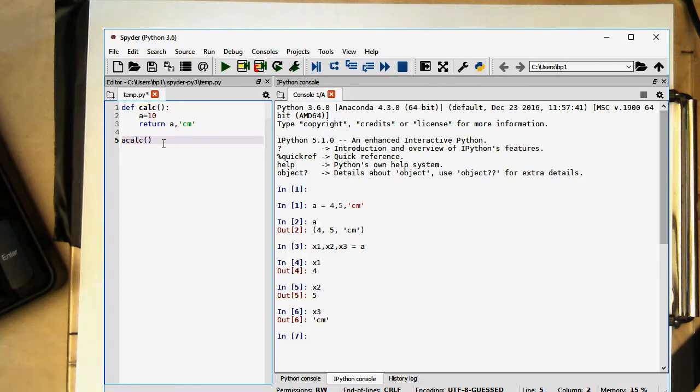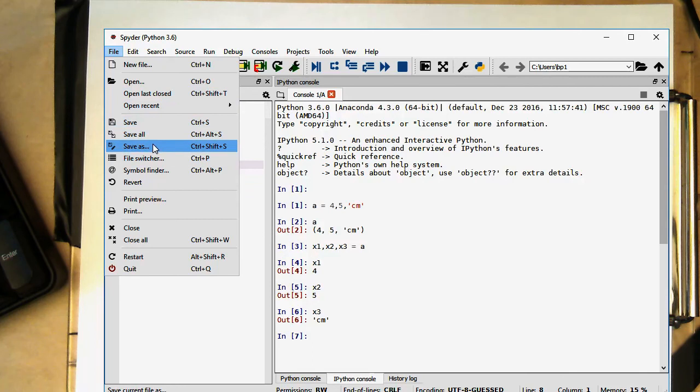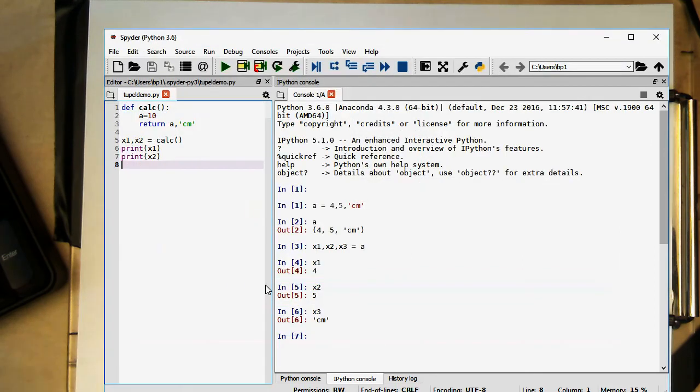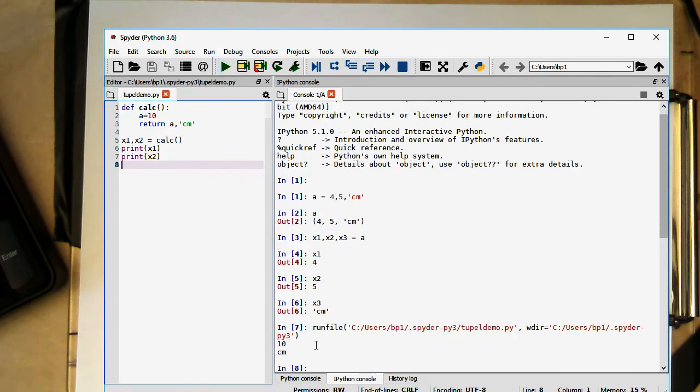Then this should be both transmitted to these two variables here. So let's save this quickly, save as tuple demo, and let's run this. Yeah, so now we see here getting the output here, 10 centimeter.